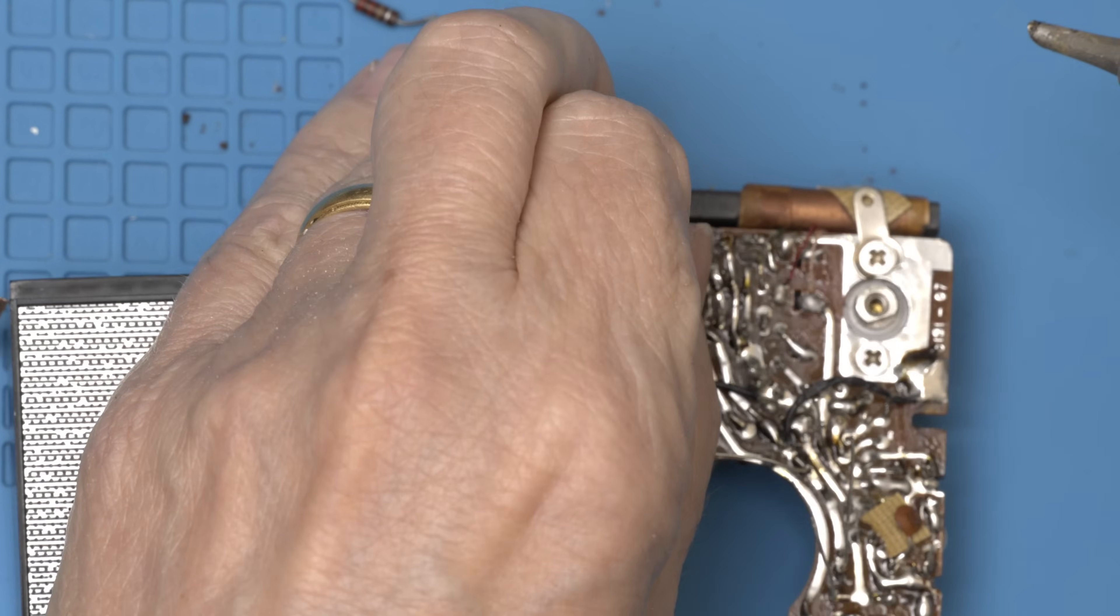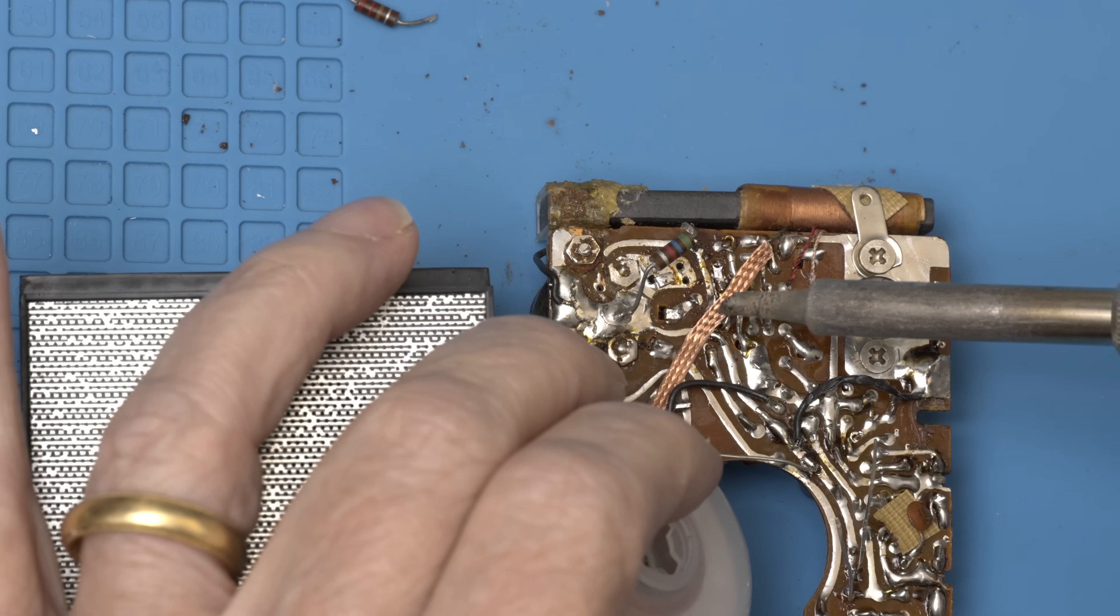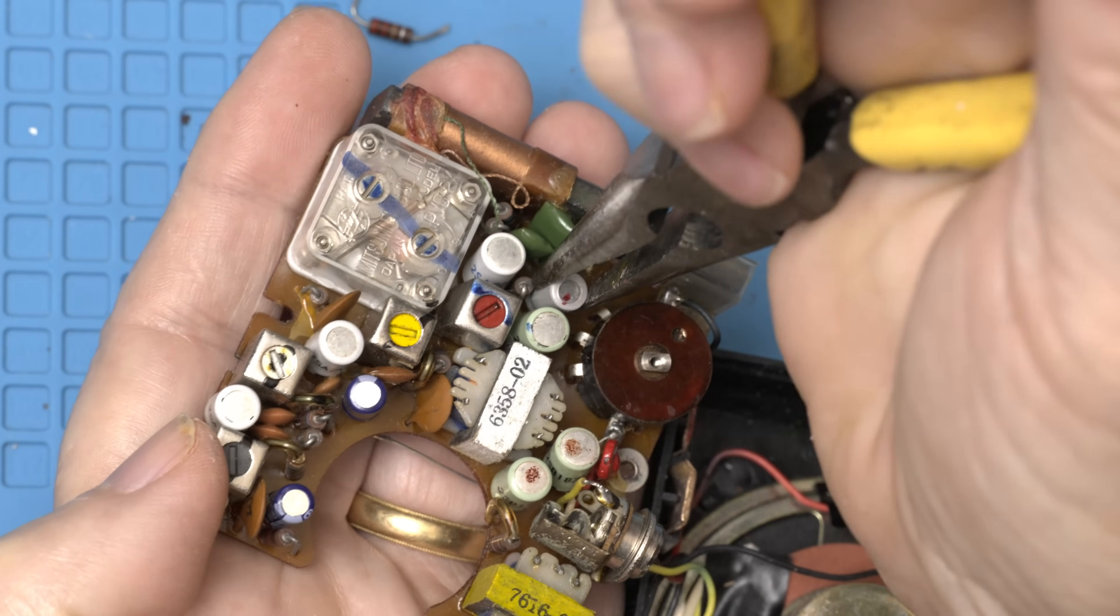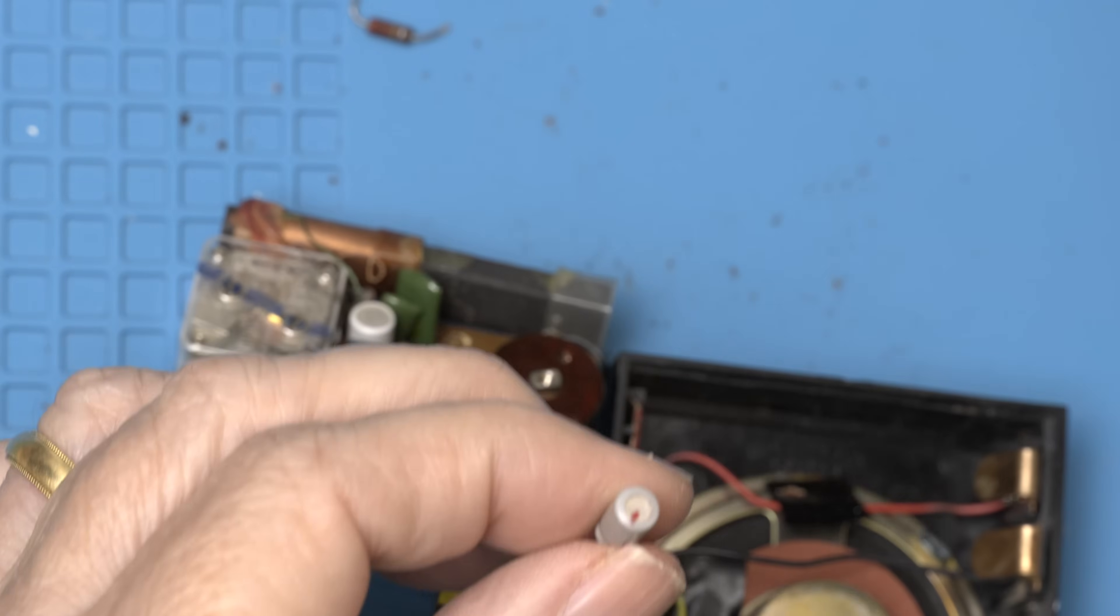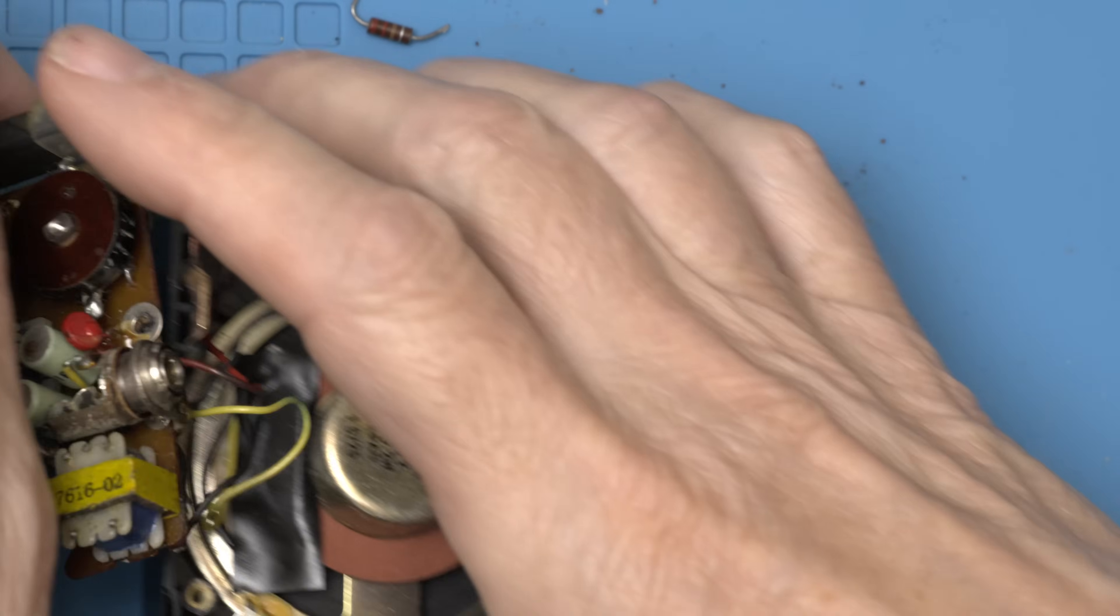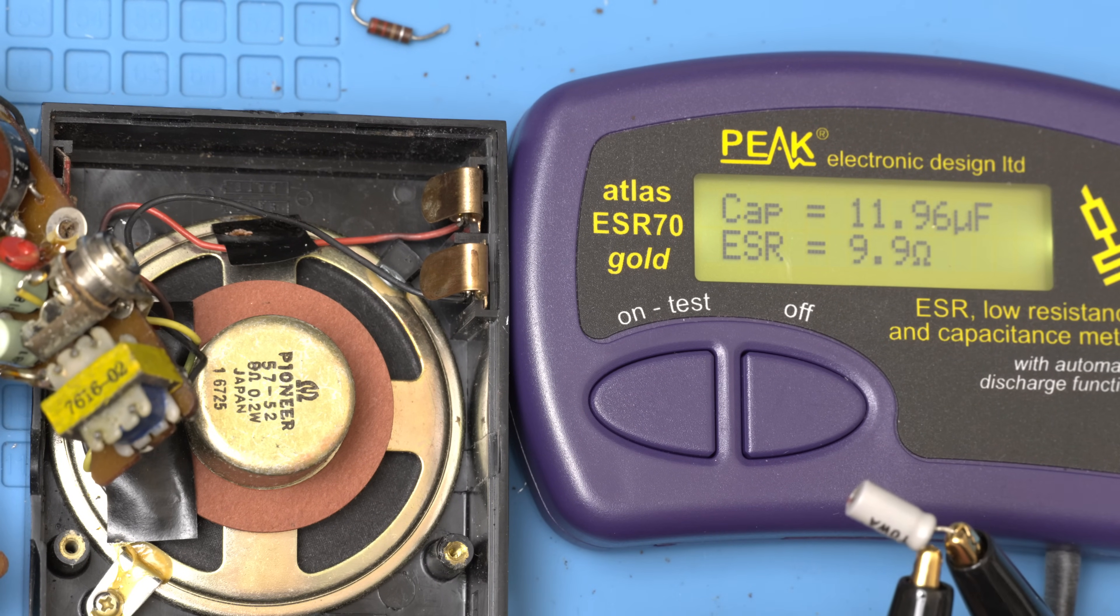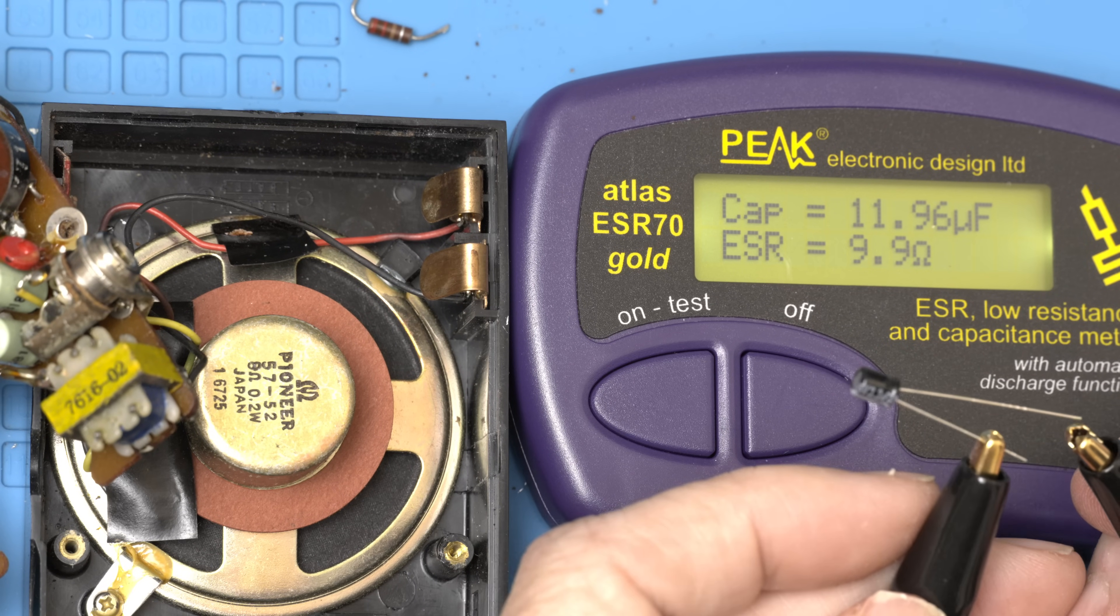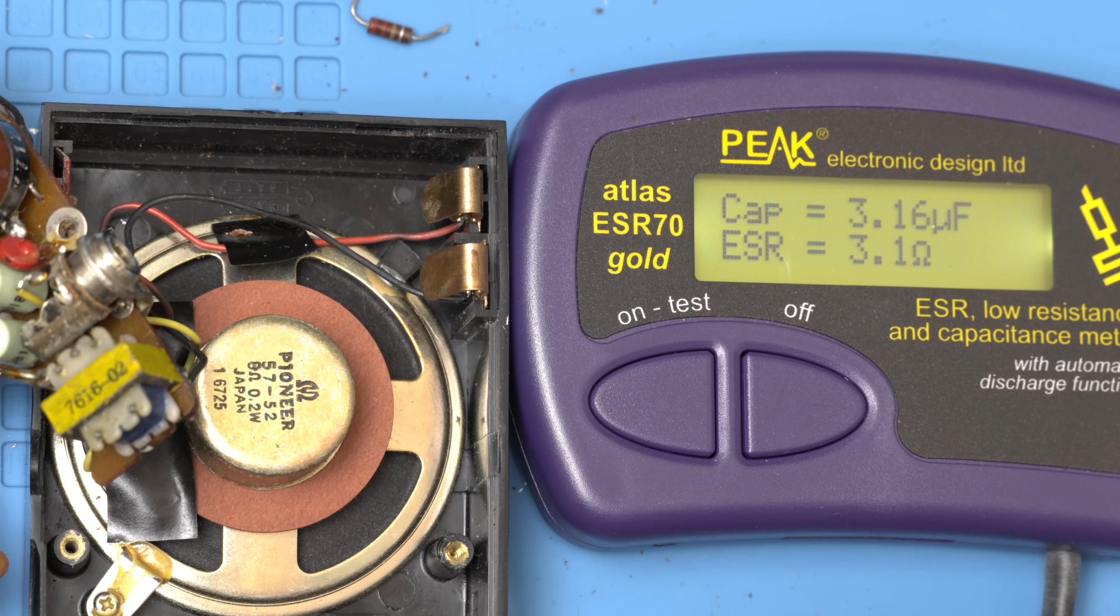Alright to get this last one out, definitely going to have to move this resistor out of the way. That was a stubborn one. Alright. Here is a 3 microfarad. And he's 12 with a 9.9. So really poor. And the new one is going to be 3.16 with a 3.1.